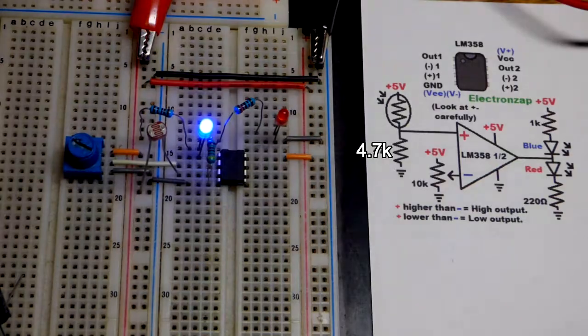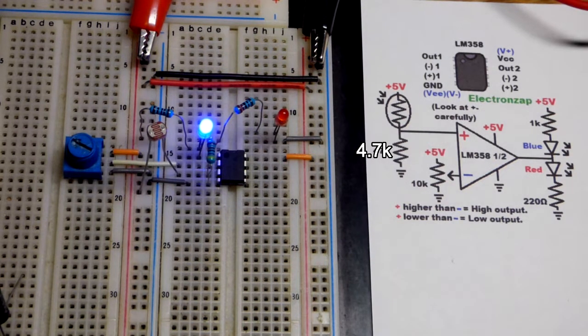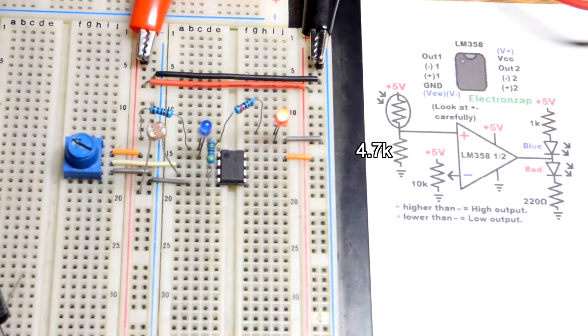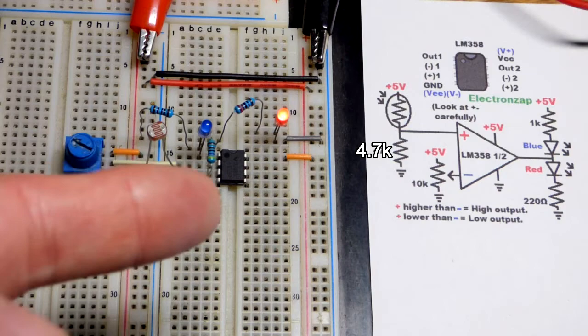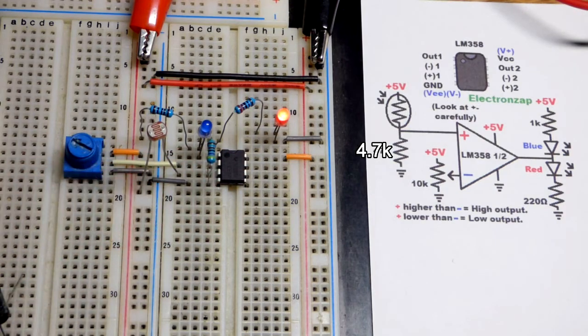We have this light level go down one and there we go. We got blue. And of course we go darker it will go blue. So we have an adjustable light level where the output is going to change between high and low.